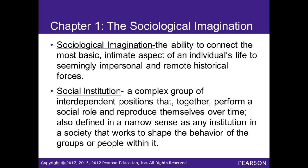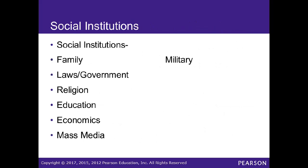All of this information about the sociological imagination and social institutions will be on the exam. Examples of social institutions include: family, laws and government, religion, education, mass media, and military. The military serves to protect society from external threats and prevent outsiders from harming its members.